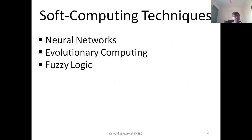Broadly, there are three basic areas that come under soft computing. One is neural networks, which we have already covered from unit one to unit four. Another very popular area is evolutionary computing, where we concentrate more on genetic algorithms. The third area is fuzzy logic, where we talk about fuzzy systems and fuzzy inputs. We will skip neural networks as we have already covered that, and focus on fuzzy logic and genetic algorithms.